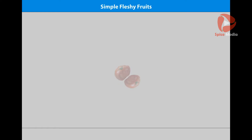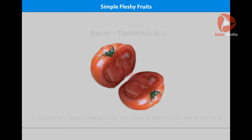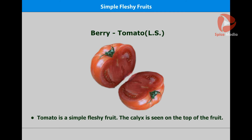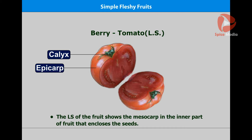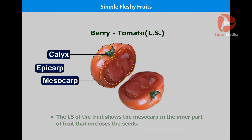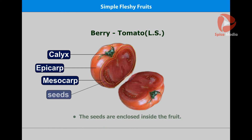Tomato is a simple fleshy fruit. The calyx is seen on the top of the fruit. The outer covering of the fruit is called the epicarp. The LS of the fruit shows the mesocarp, and in the inner part of the fruit the seeds are enclosed inside.